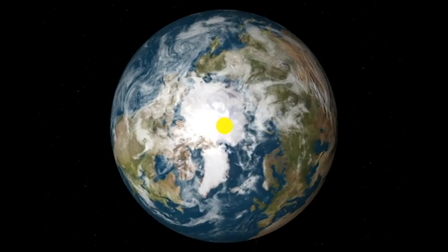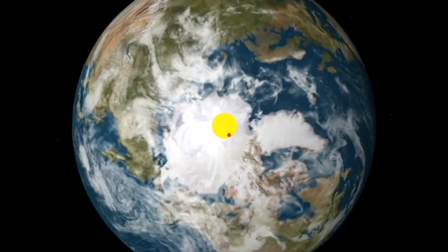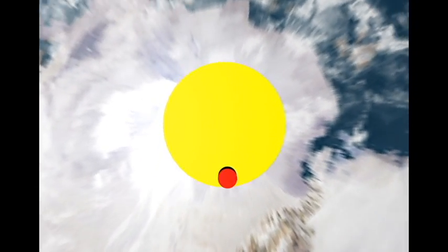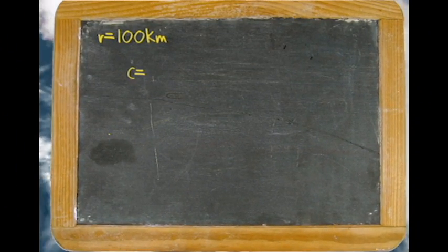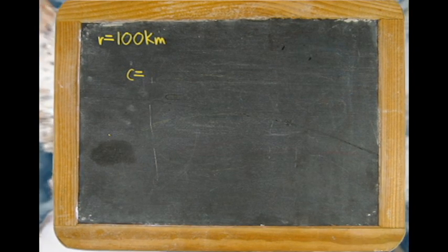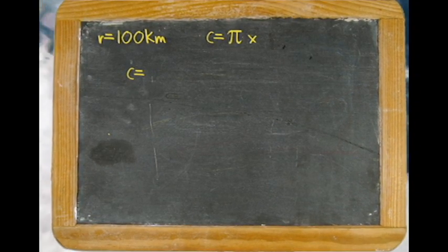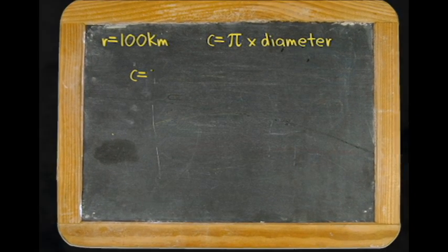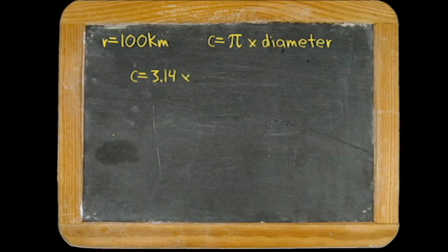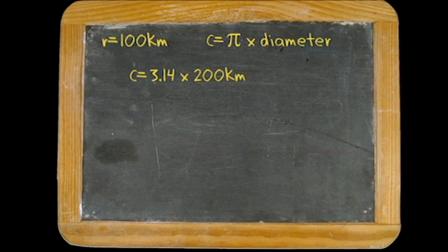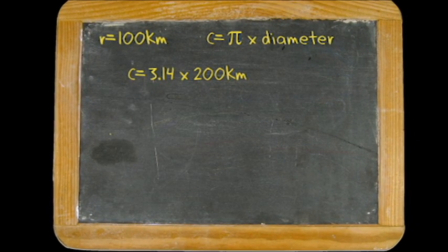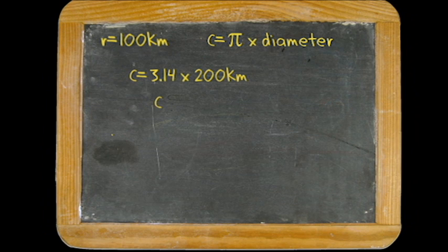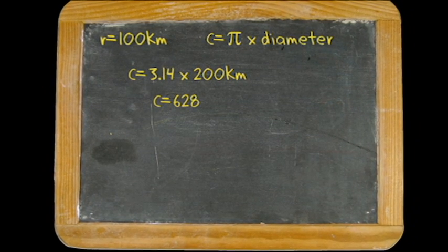If we measure the speed of Earth's rotation near the pole, it would be moving pretty slow. Let's use this red dot as a reference point and measure the distance it travels in one day. This point is 100 kilometers from the Earth's pole. Using the formula circumference equals π times the diameter of the circle, we can plug in the value for π and 200 kilometers for the diameter, because diameter is twice the radius. When we do the math, we get a distance traveled of 628 kilometers.